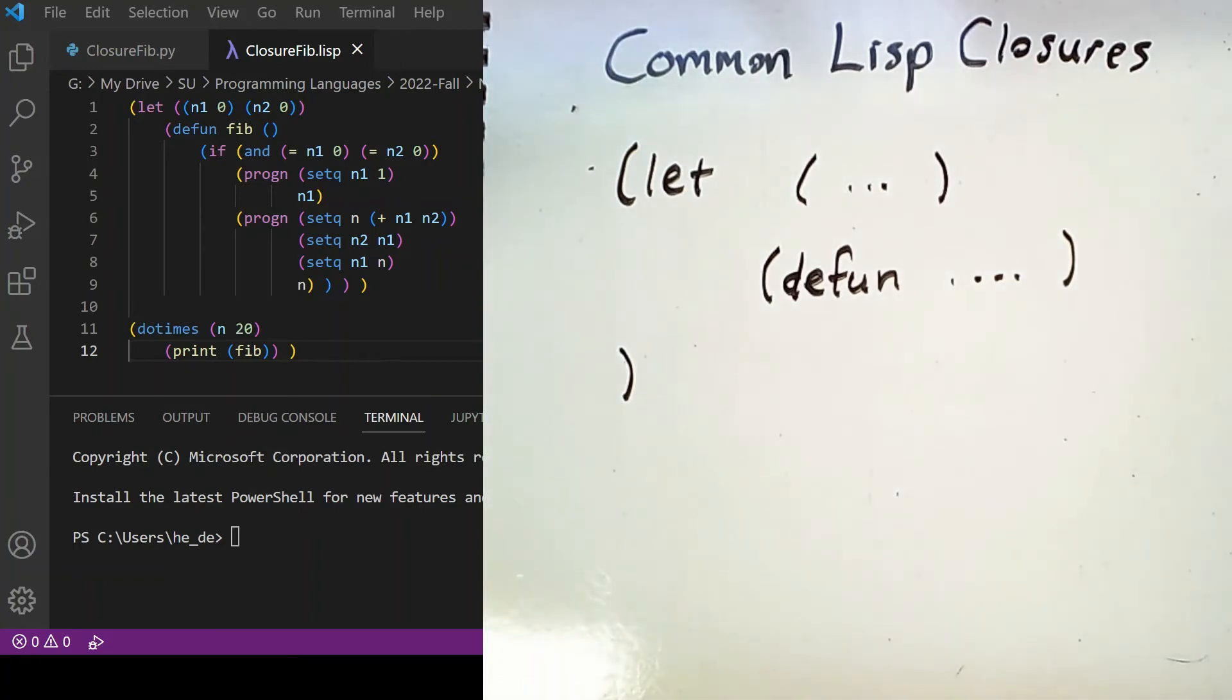So in this example over here, we have let n1 and n2 equals zero, and then we define fib similarly to how we did in the Python example. And then after that we call that function 20 times, which produces this result.